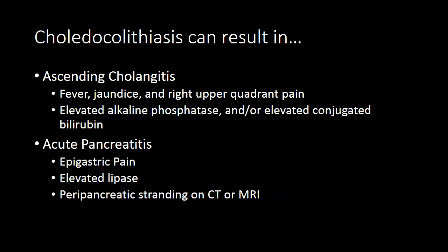Choledocholithiasis can also cause ascending cholangitis or acute pancreatitis. The obstructing stone can cause superinfection or inflammation of the biliary tree, often presenting with fever, jaundice, and right upper quadrant abdominal pain. If the obstruction of the common bile duct occurs near the ampulla of Vater, the pancreatic duct can also be obstructed, and that obstruction can result in acute pancreatitis.